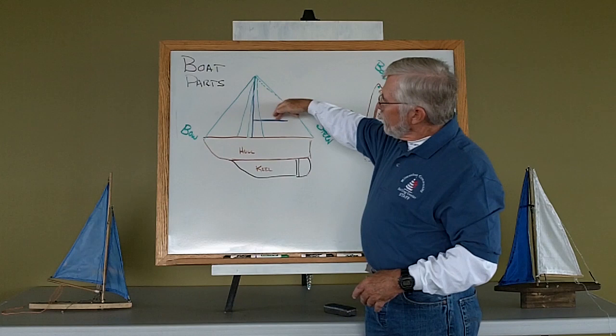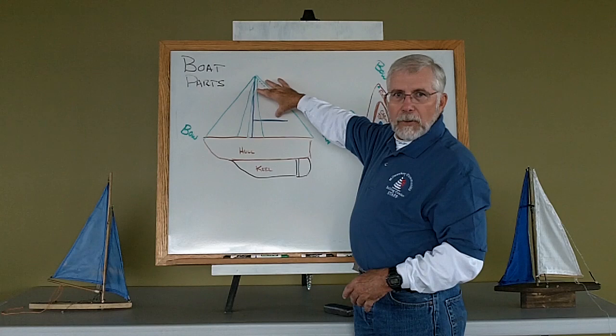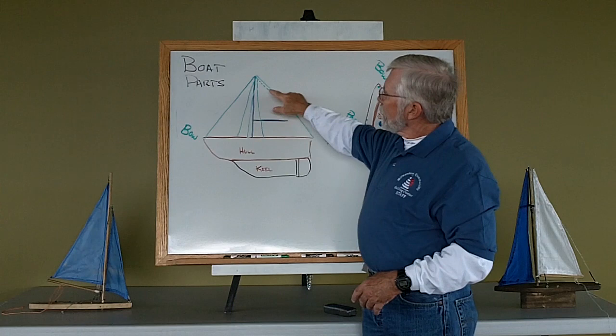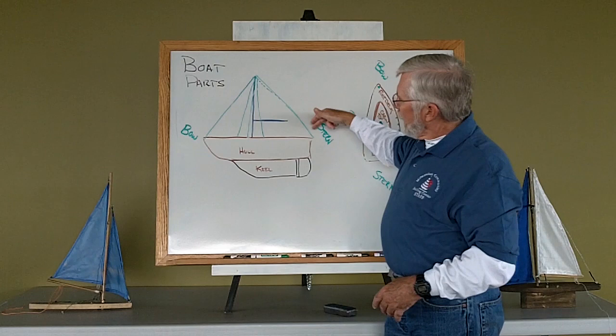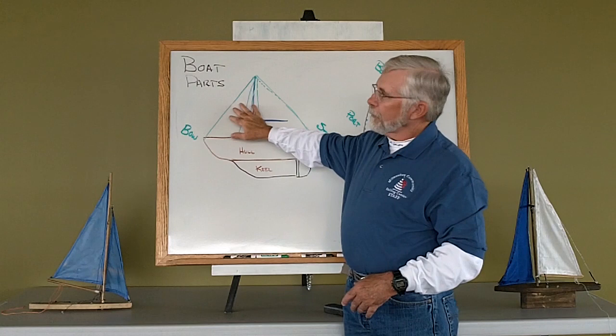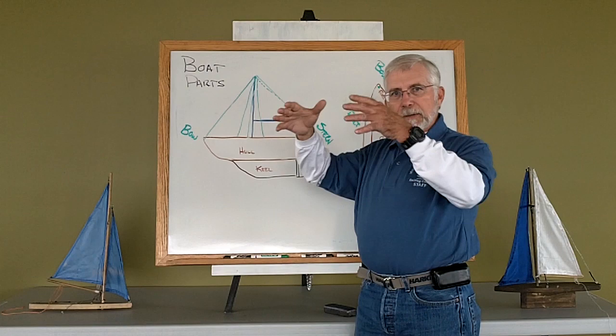Here we have the mast going up and the boom coming back. The mast and the boom will be what we put our mainsail on. We have a wire rope cable that comes from the bow up to the top of the mast, from the top of the mast back to the stern. Those are called stays. This is the forestay. This is the backstay.